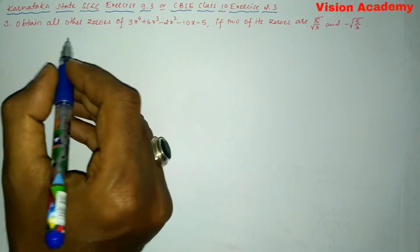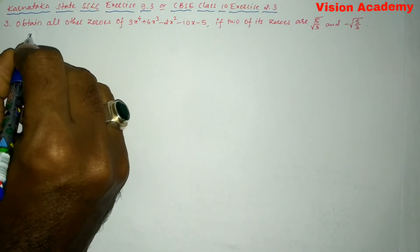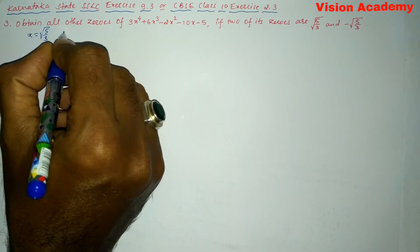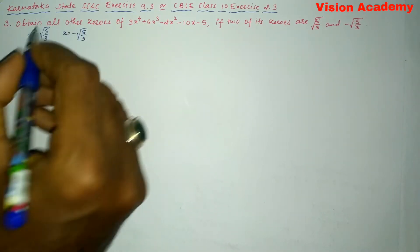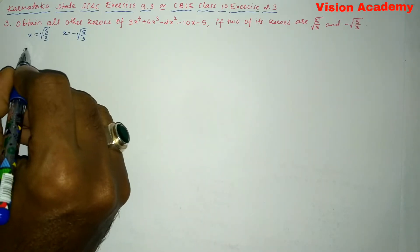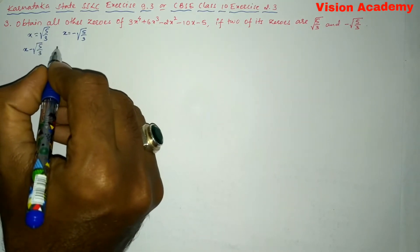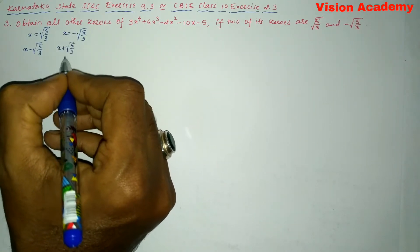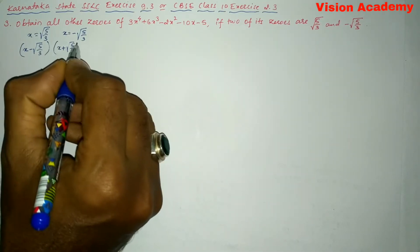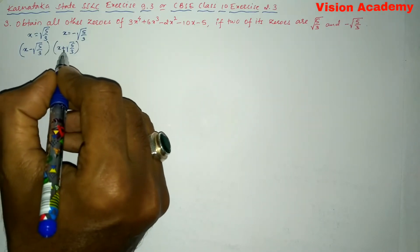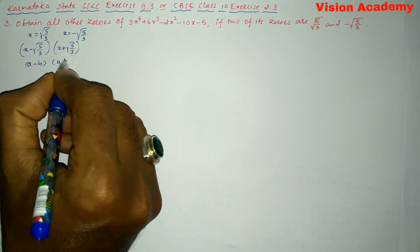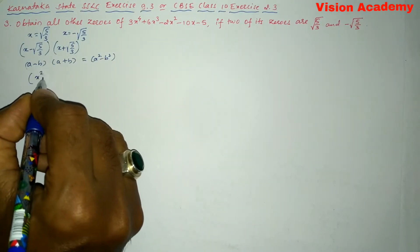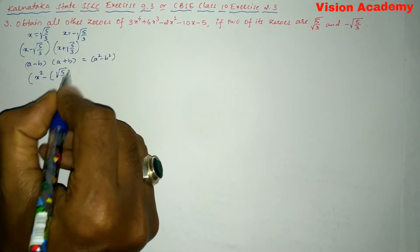We write x = √(5/3) and x = −√(5/3). Transforming to the left-hand side gives (x − √(5/3)) and (x + √(5/3)). Multiplying both, this is in the form (a − b)(a + b), which gives a² − b², so we get x² − (√(5/3))².